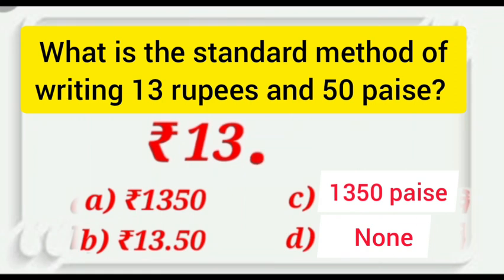And while using decimal, we have to write amount of rupees on left side of the decimal and amount of paise on the right side of the decimal. So, here we have to write 13.50. Option B is the correct answer and we will put a tick here.